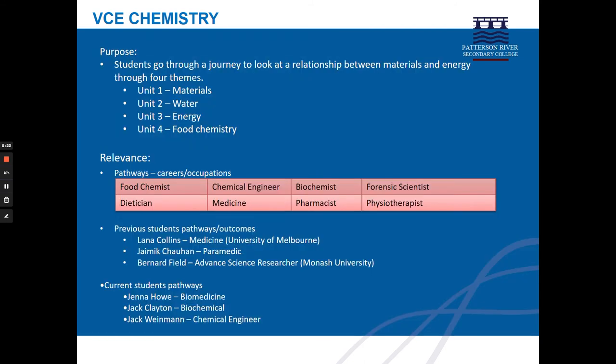In Unit 1, students study different types of materials and their specific uses for human endeavour. You get to investigate chemical properties of materials such as salts, nanomaterials and polymers. Did you know that graphene is actually a single layer of carbon atoms and yet it is stronger than steel? These are some of the things you get to study in chemistry.